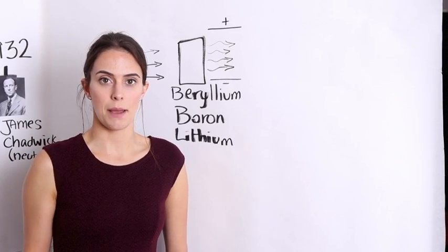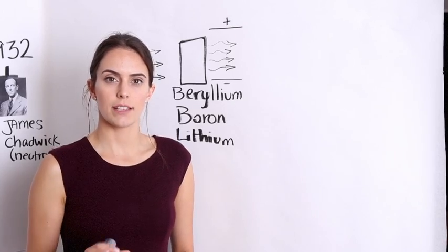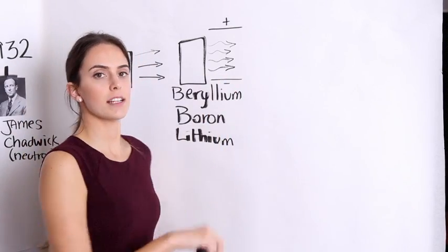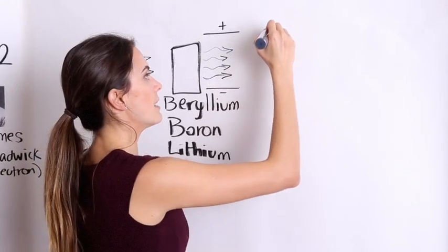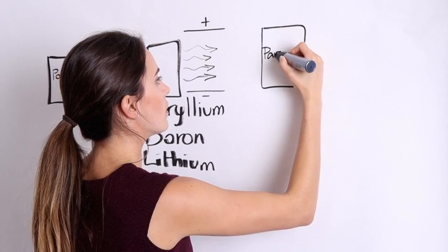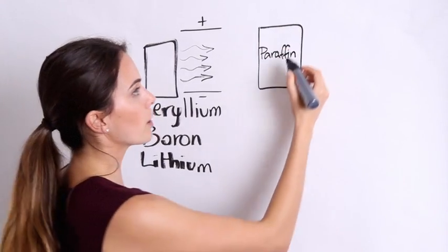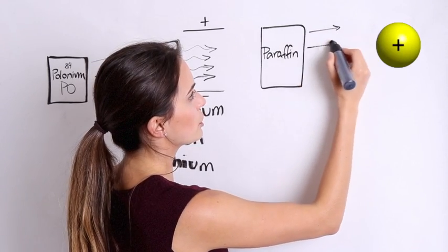Around the exact same time, Irene Joliot and Frederick Joliot were discovering that when this exact unknown radiation penetrated through a block of paraffin, protons would come shooting out.